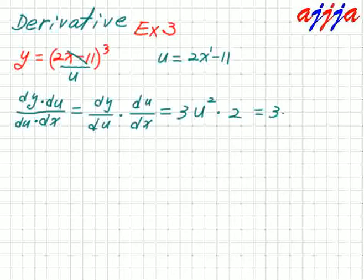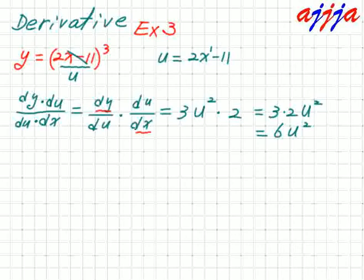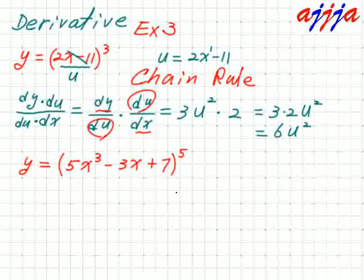So the answer is 3 times 2, which is 6u to the second power. That's the final answer: 6u squared. We were looking for dy over dx, but we used this substitution — like a chain. That's why we call this the chain rule!